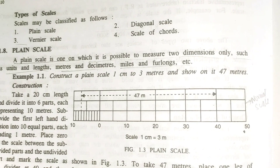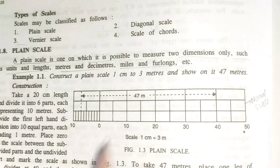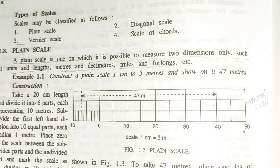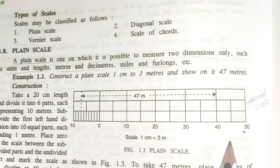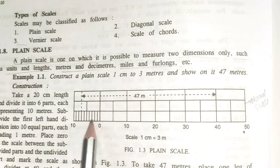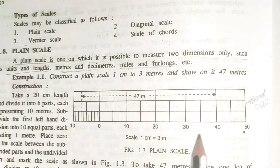For example, in Plane Scale: one centimeter equals three centimeters. This shows how two measurements — a unit and its tenth — can be read from a plane scale.